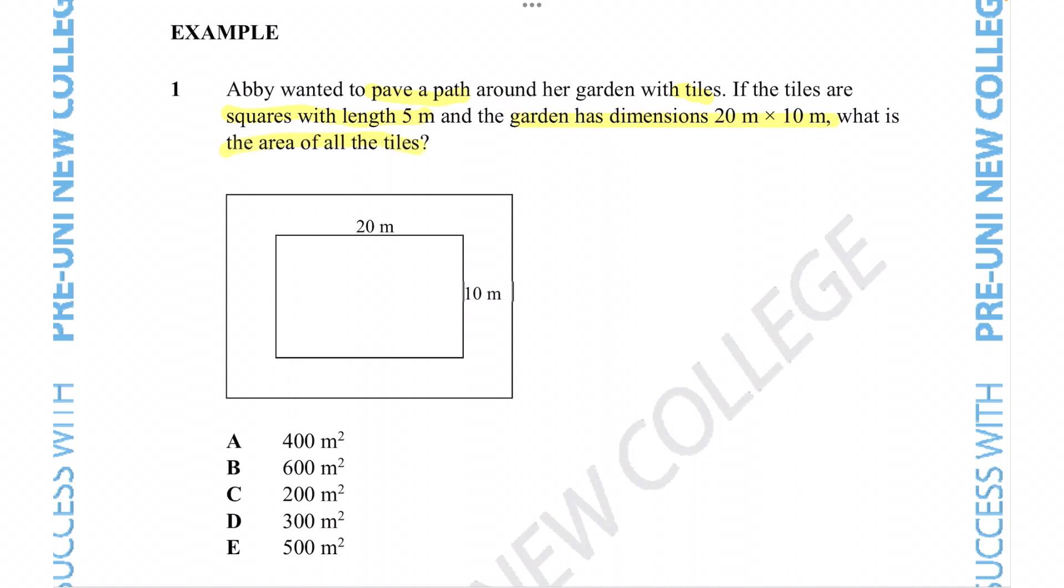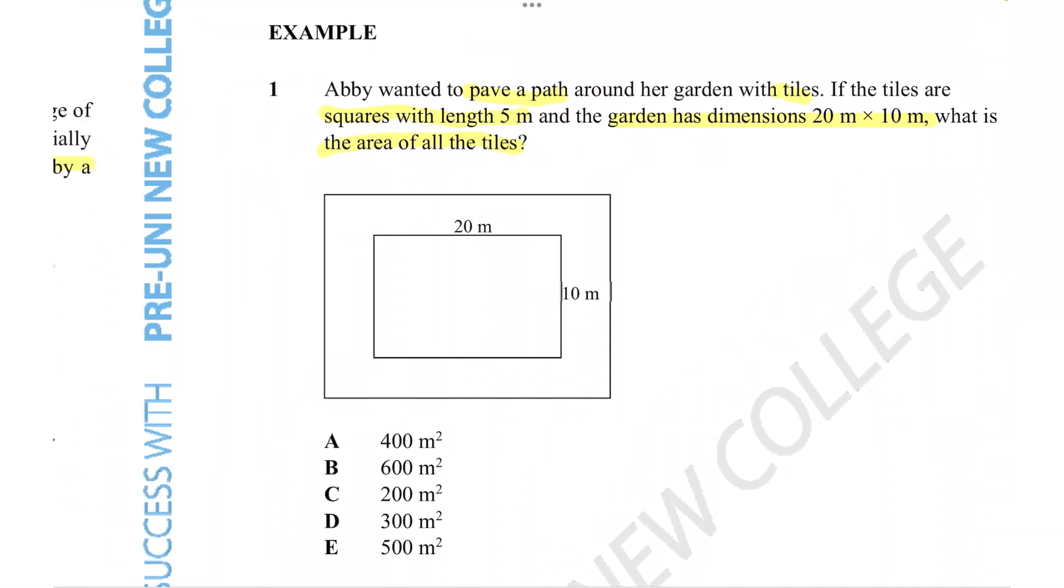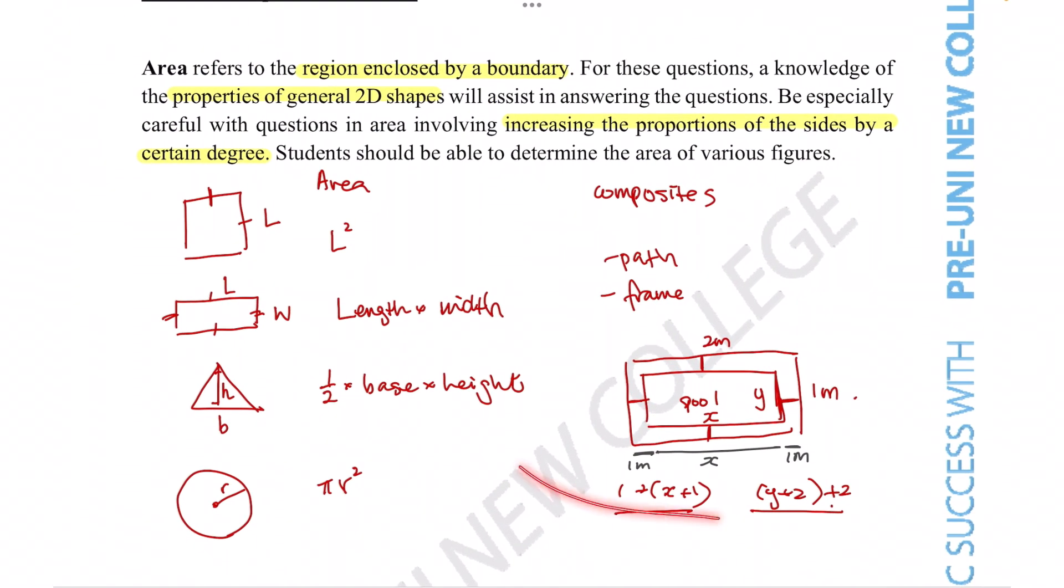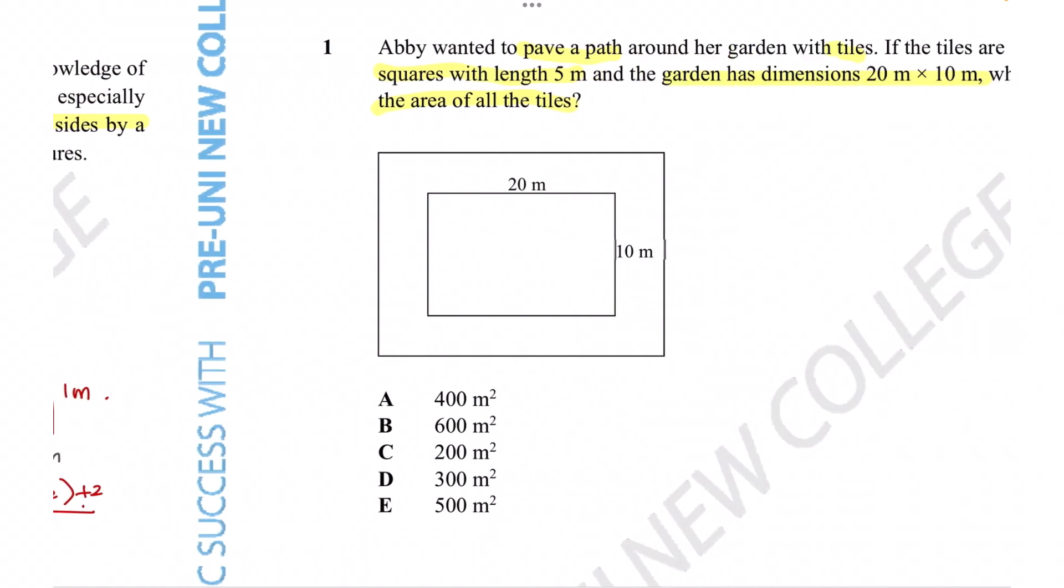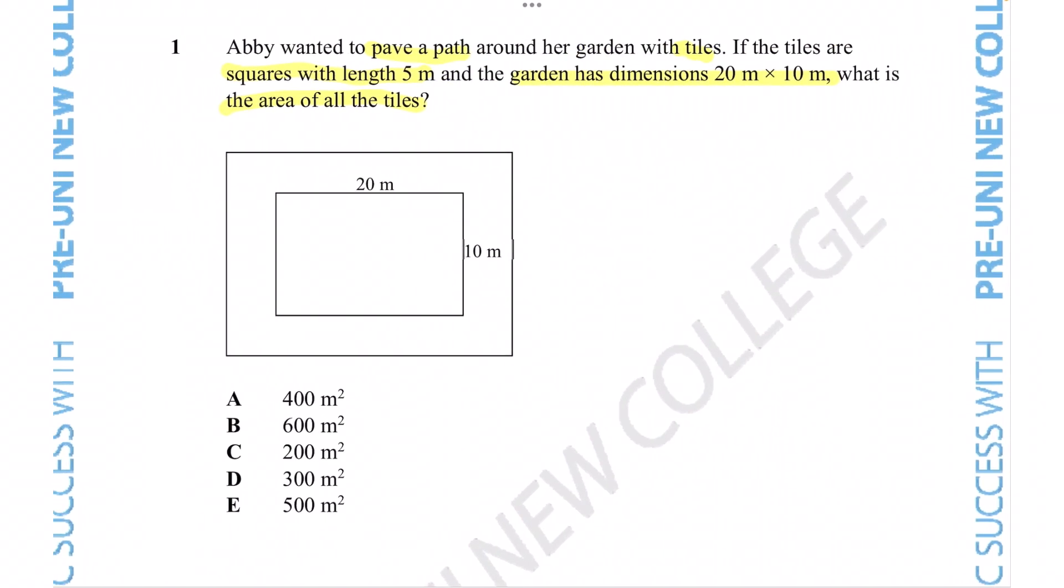So here we see exactly one of the questions we actually mentioned while going through the description. We talked about how a common error is to actually forget to add on the extra tile or whatever it is they added around the original area. So we know that one of the first steps that we need to make sure we do is to draw a diagram, and thankfully they have started us off by giving us this very simple picture of her garden and her tiles.